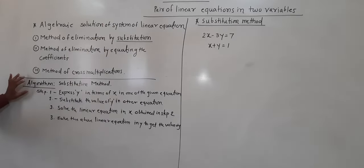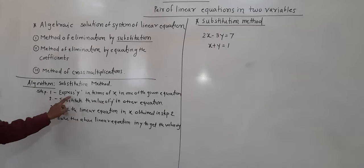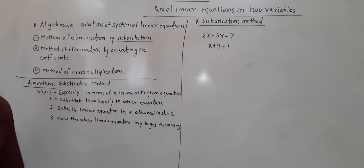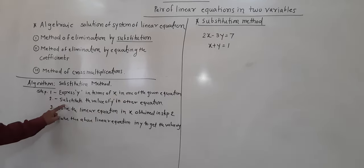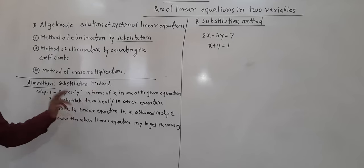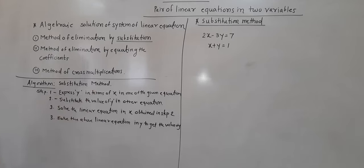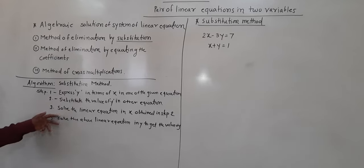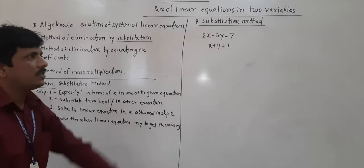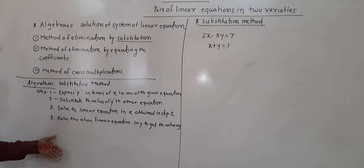Here I have written the algorithm for the substitution method. What is the first step? Express y in terms of x in one of the given equations. Second: substitute the value of y in the other equation. Third: solve the linear equation in x obtained in step 2. And fourth: solve the linear equation in y to get the value of y. These are the four steps of the algorithm.